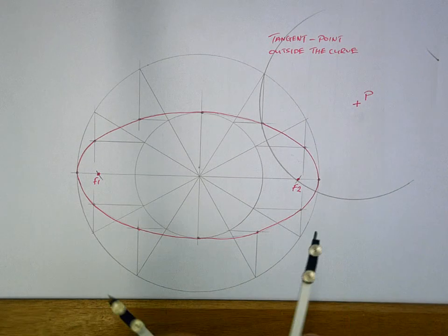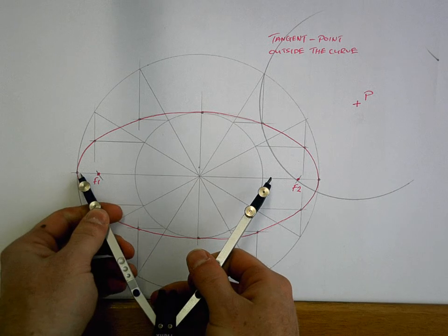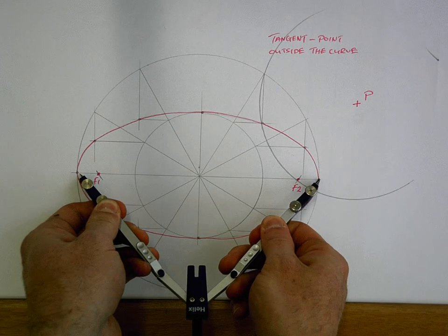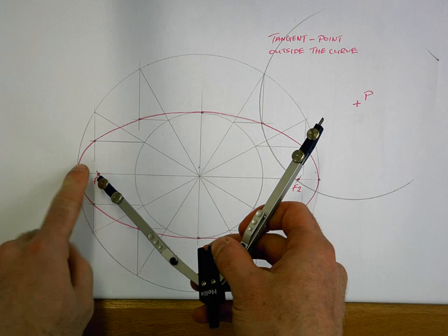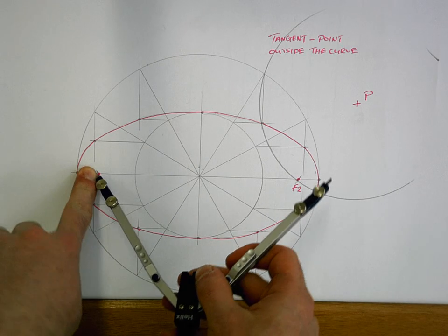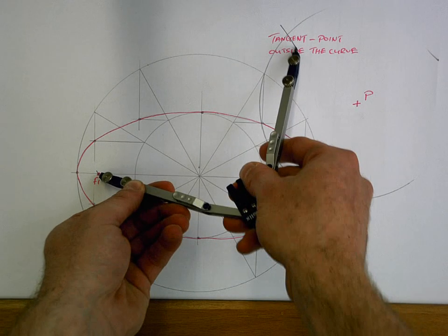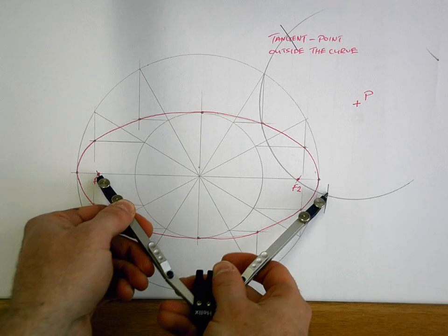The next thing to do is get the length of our major axis with our compass. Stretch it out. Take that length and strike it from the focal point that's furthest away from point P. And it should cross over your first arc at two points, top and bottom.